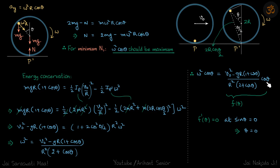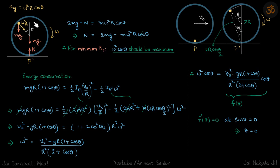Now we need to find when this expression for N is minimum, equivalently when ω²·cosθ is maximum. Differentiating and setting f'(θ) = 0 — though the calculation is a bit involved — yields sinθ = 0. So either θ = 0, which is at the top, or θ = π, which is at the bottom.